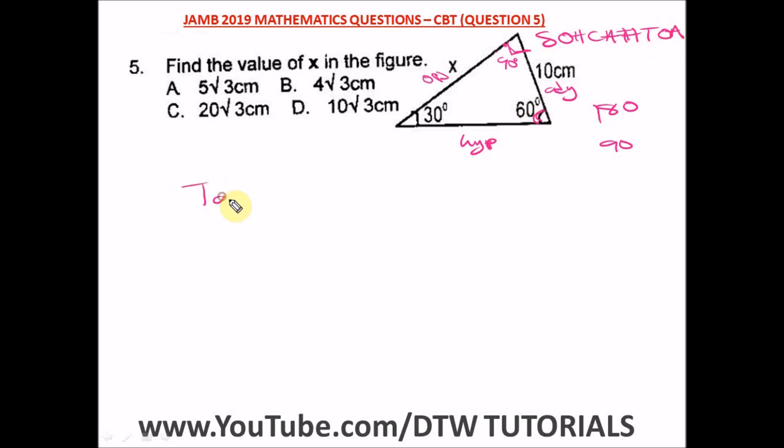So from here we have tan 60 degrees equal to our opposite, which is x, divided by the adjacent, which is 10 centimeters.